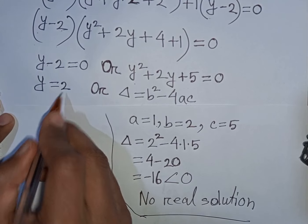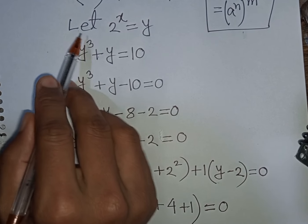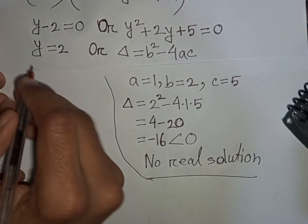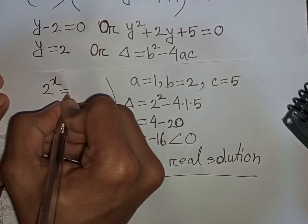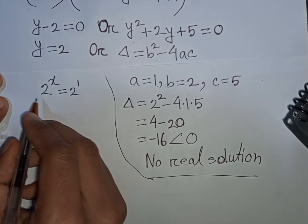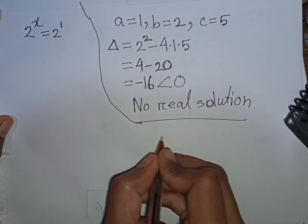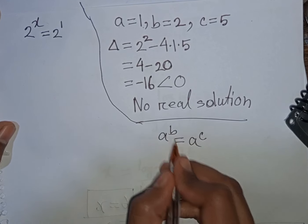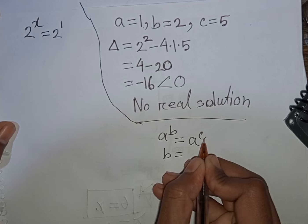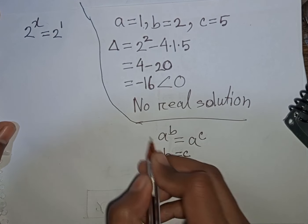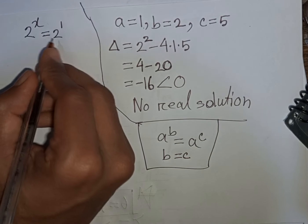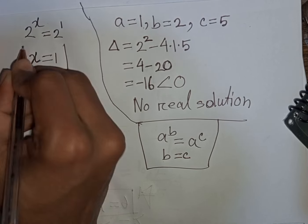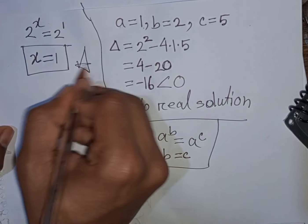From the first factor we get y equals 2. Remember that we let 2 to the power x equal y. So 2 to the power x equals 2, which can be written as 2 to the power 1. Applying the exponential rule that if a^b equals a^c then b equals c, we compare the bases — both are 2 — so x equals 1. This is the final answer.